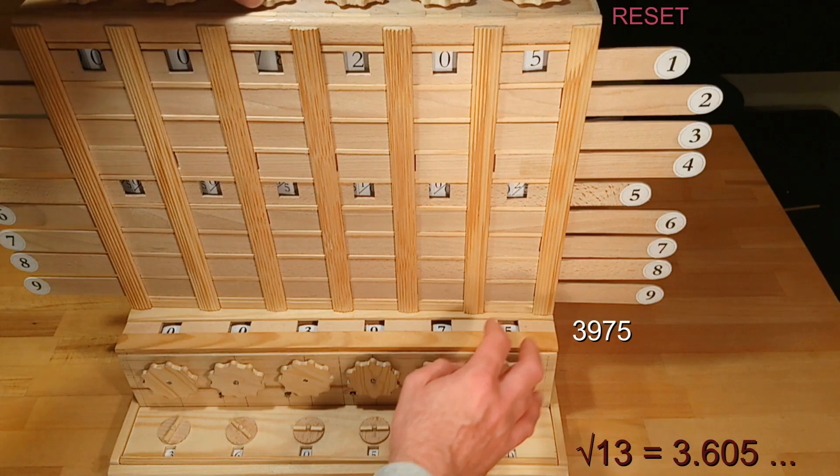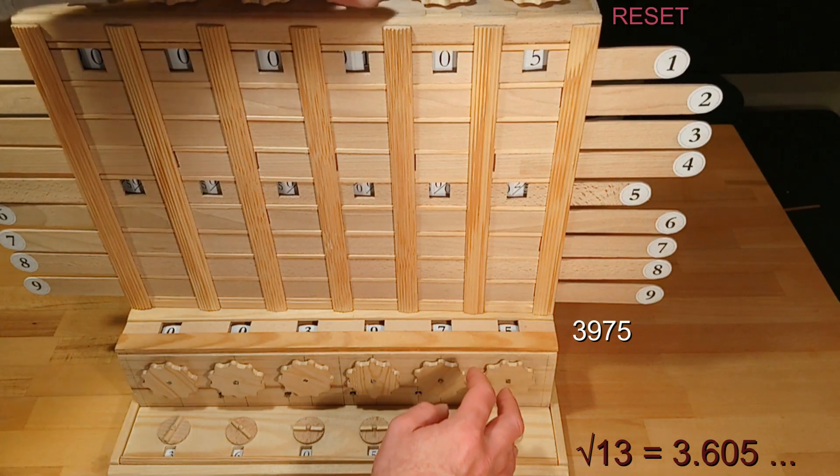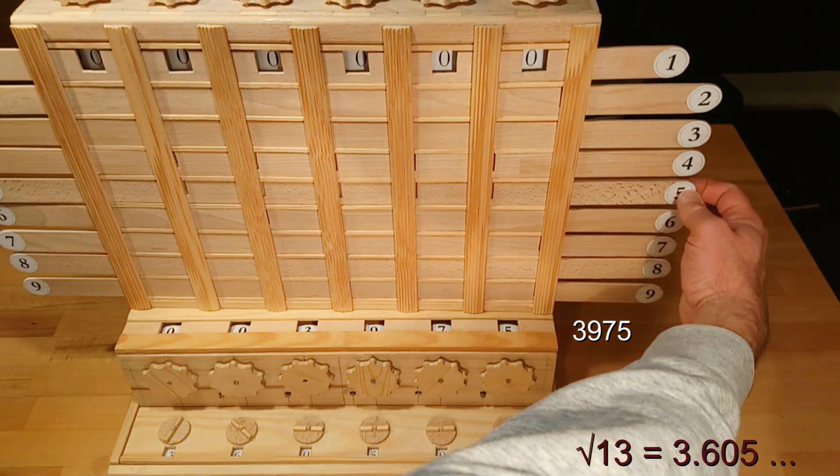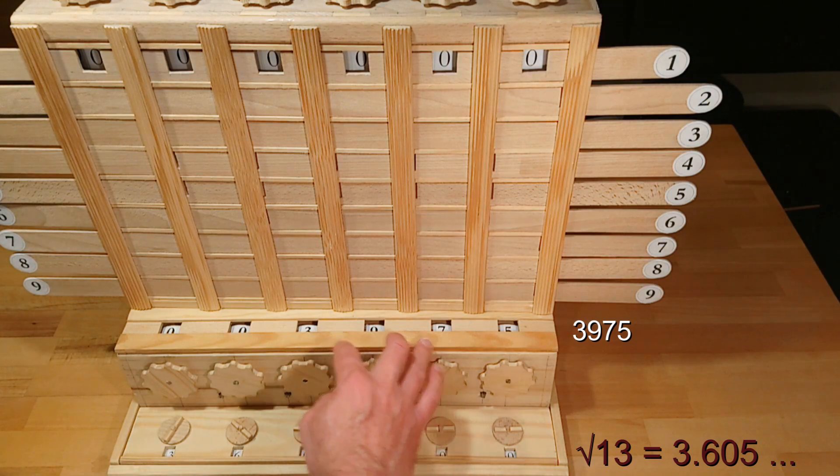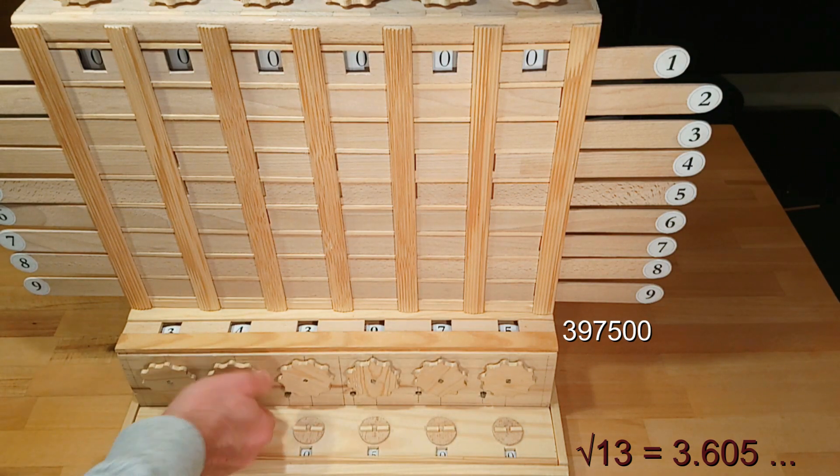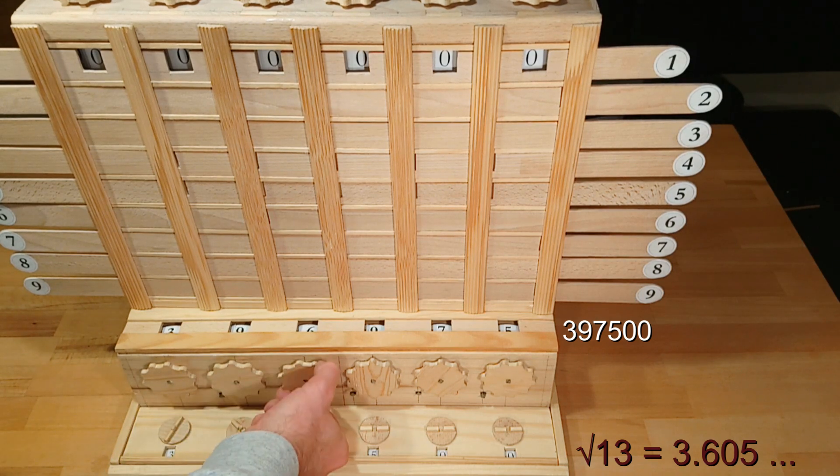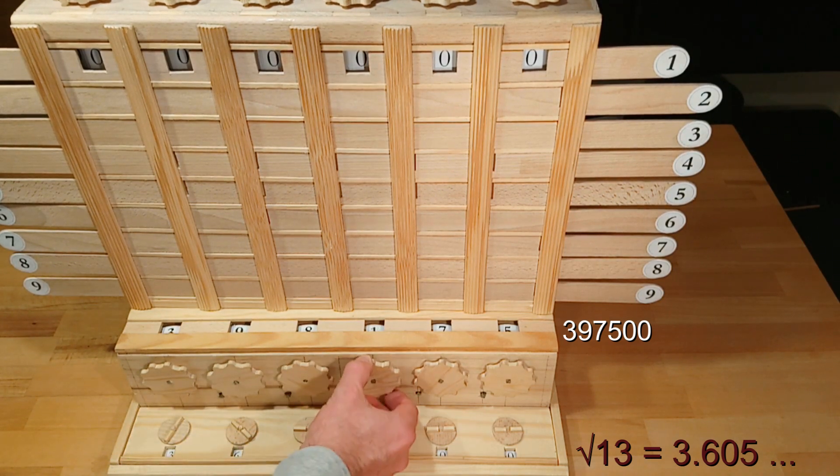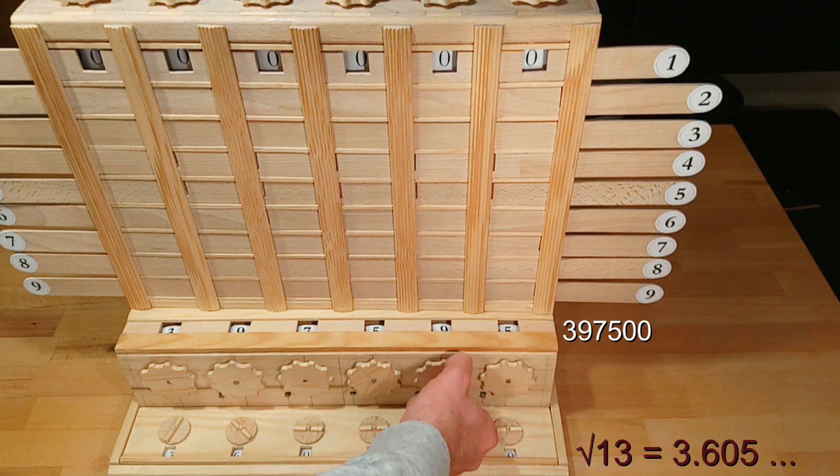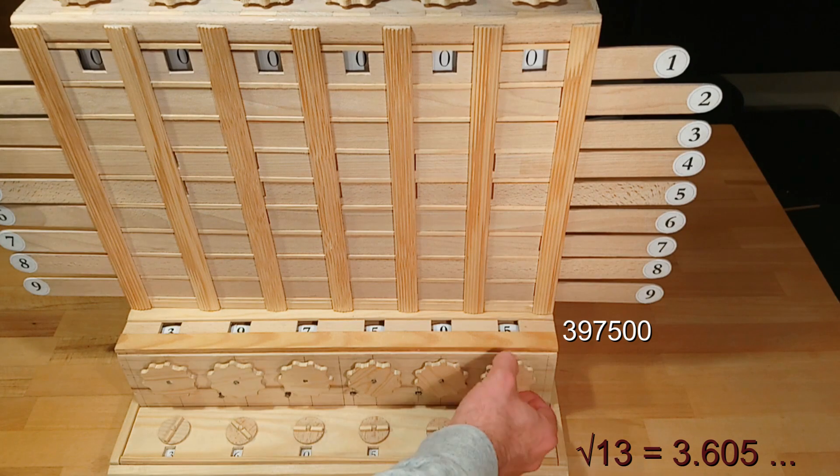So let's reset the multiplier now. And then again we have to move the number in the adder two places to the left for the next decimal place. And now we have 397,500 in the adder.